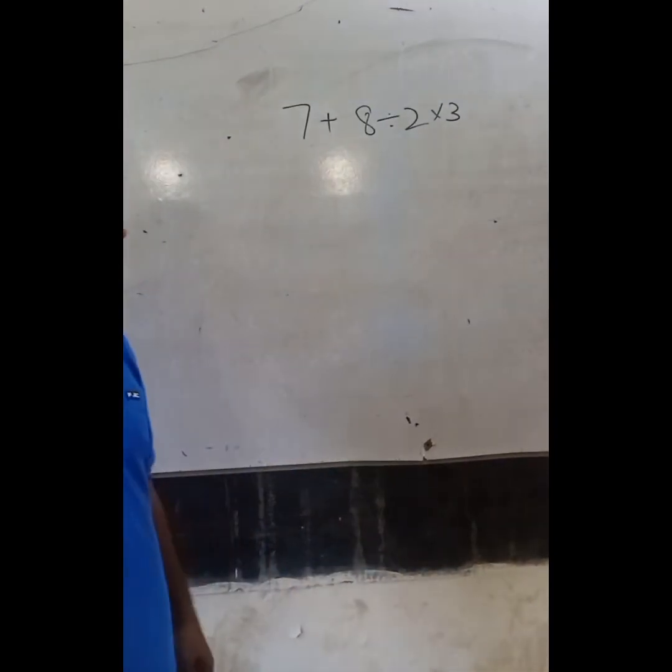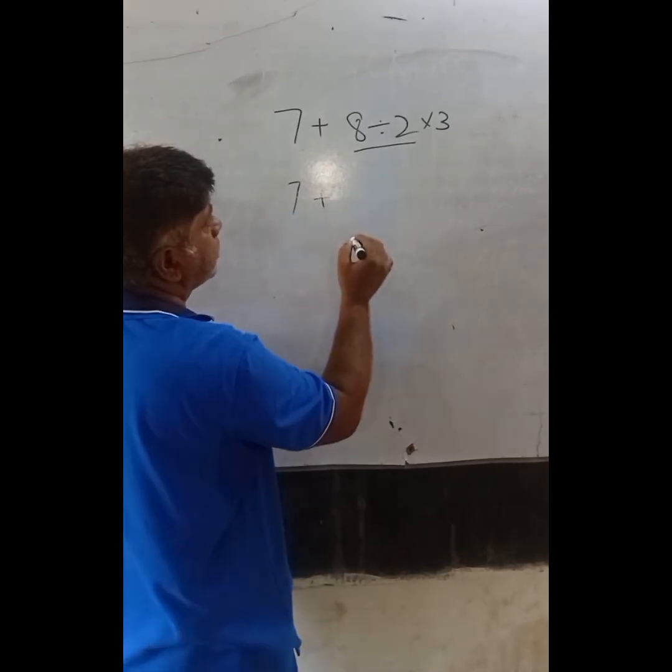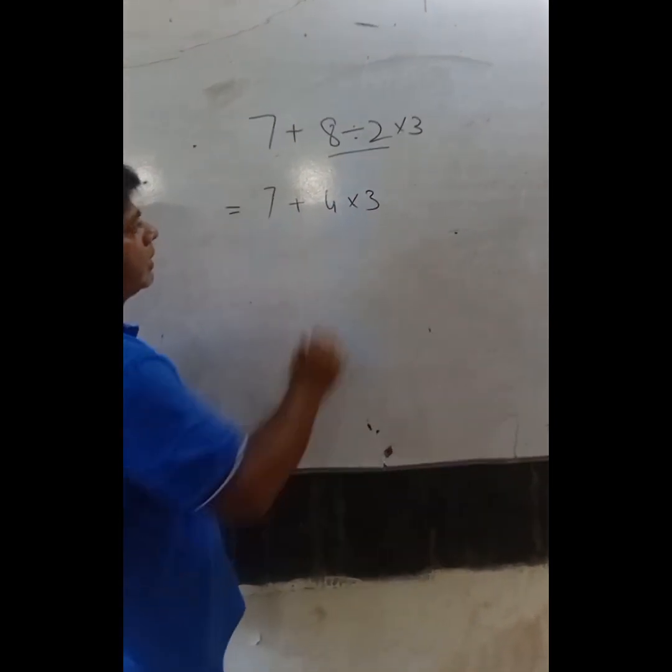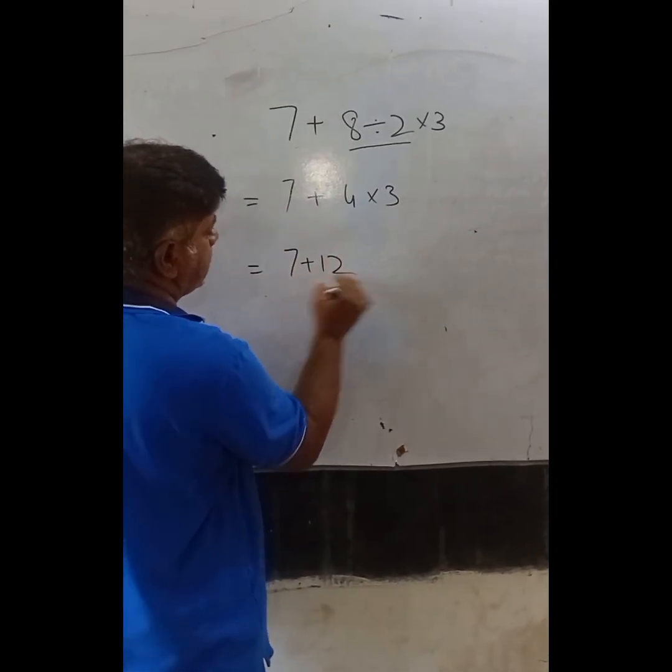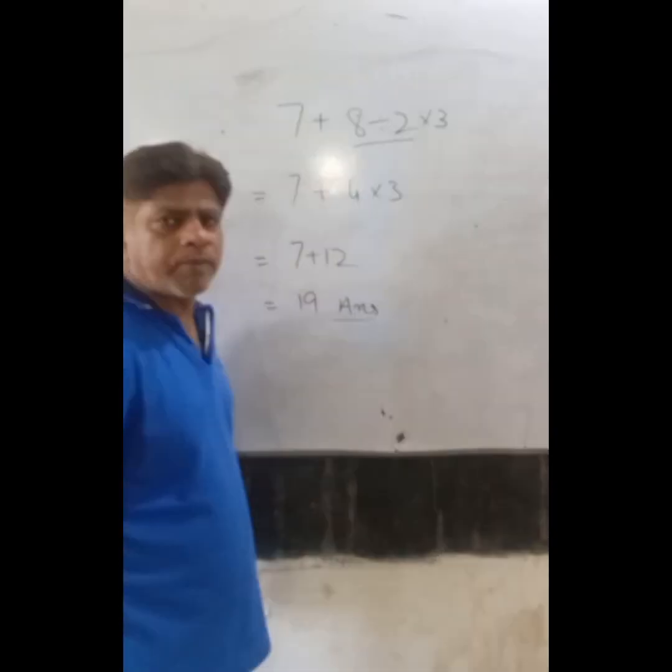What will happen? We must solve 2 times 3 equals 6, plus 3 equals 9, plus 12 equals 21, and around this 19. This is how BODMAS works.